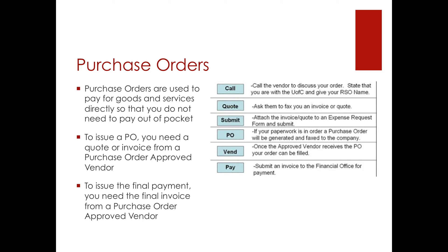The next major purchase type is a purchase order. Purchase orders are used to pay for goods and services directly so that you do not need to pay out of pocket. To issue a purchase order, you need a quote or an invoice from a purchase order approved vendor. The list of purchase order approved vendors is linked in the Dig Deeper section of this module. If the vendor you are hoping to use is not on the approved vendor list, you would need to issue a payment, not a purchase order.